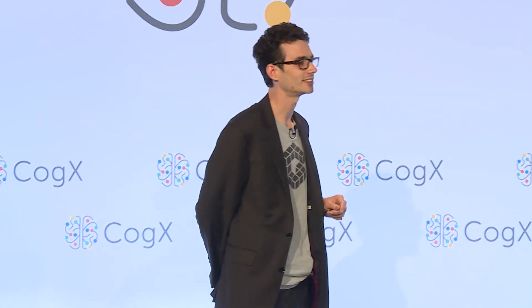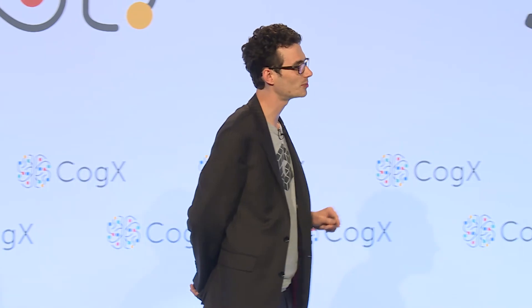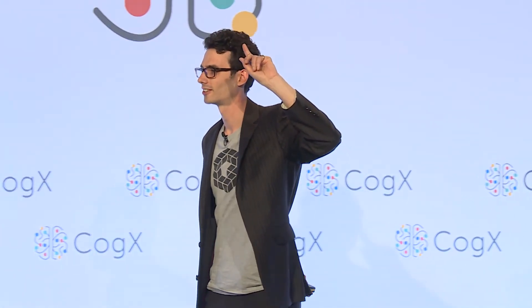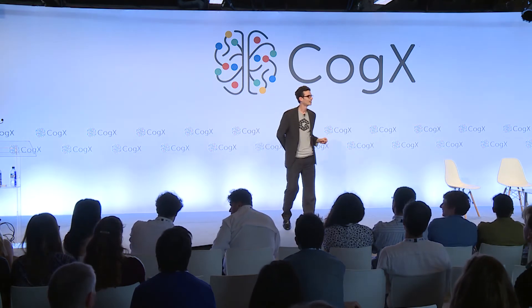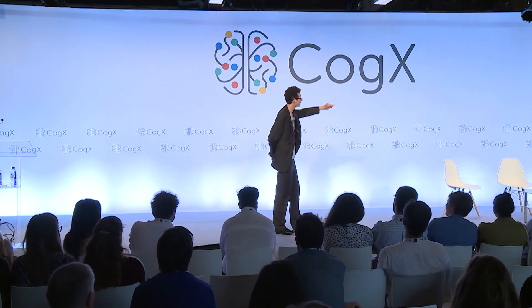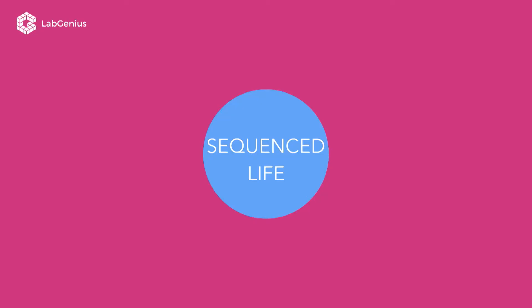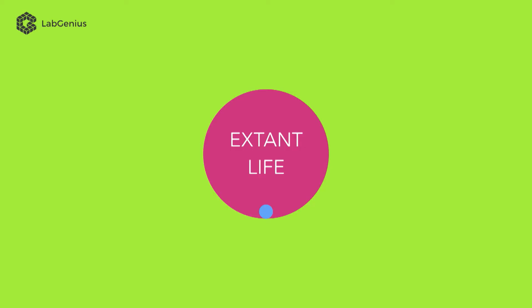Who here has either had their genome sequenced or knows somebody who has? Okay, a surprising number of you. Their DNA sits in this blue circle of sequenced life, which is the tiniest fraction of all of the life that currently exists on Earth. This pink circle includes sharks and llamas and everything else that's alive.